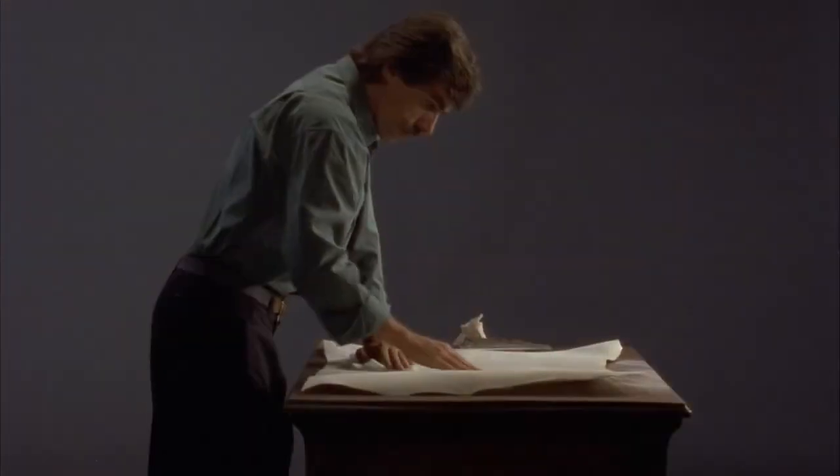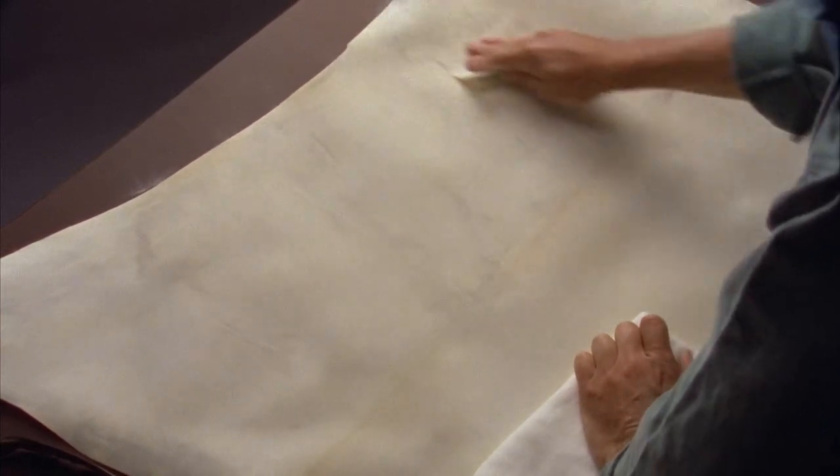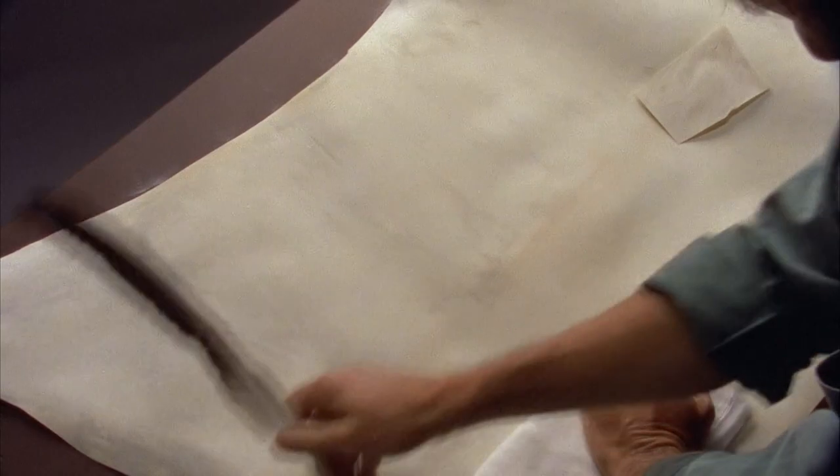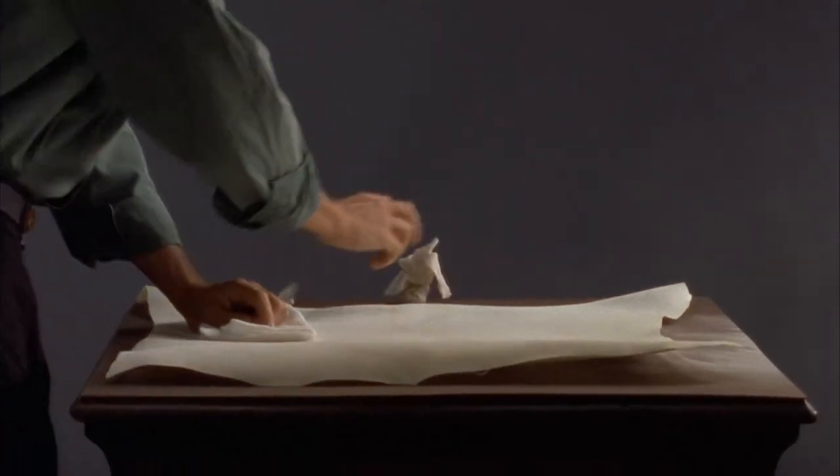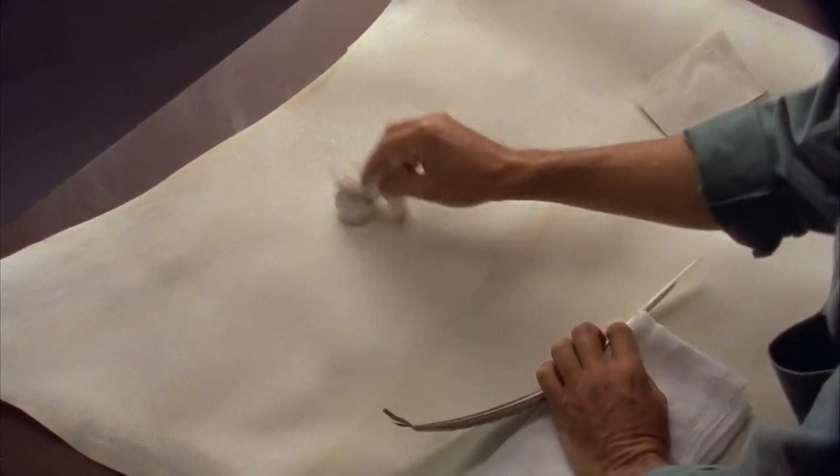Before parchment could be written on, it had to be specially prepared. First, the parchment was rubbed with pumice powder to roughen the surface and then dusted with a sticky powder. These steps made the surface receptive to inks and colors.